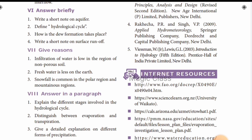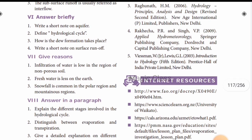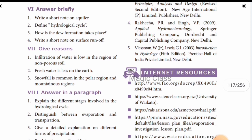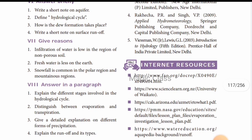Third question: how does dew formation take place? The answer is on page 106. Dew is a water droplet formed by the condensation of water vapor on a relatively cold surface of an object. It forms when the temperature of an object drops below the dew point temperature, due to condensation of water vapor on the cold surface.